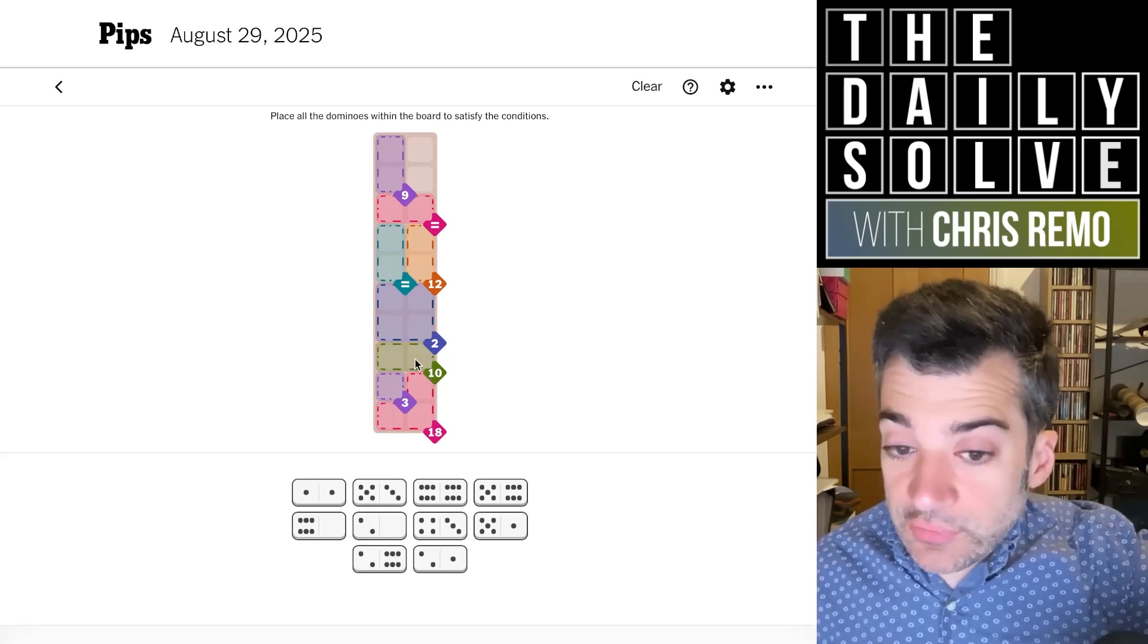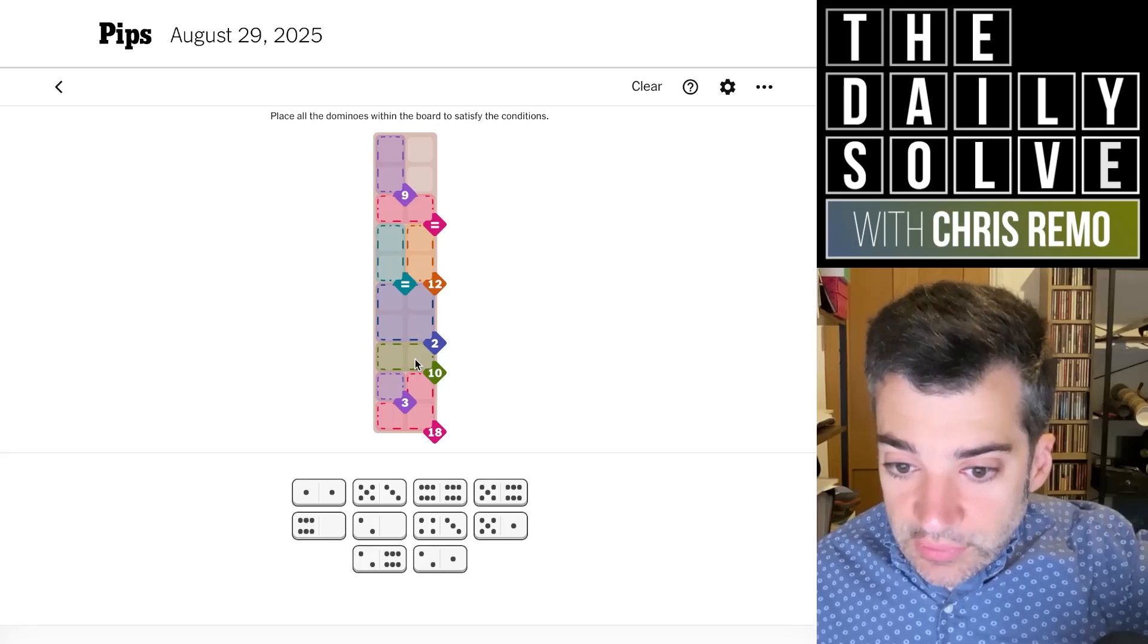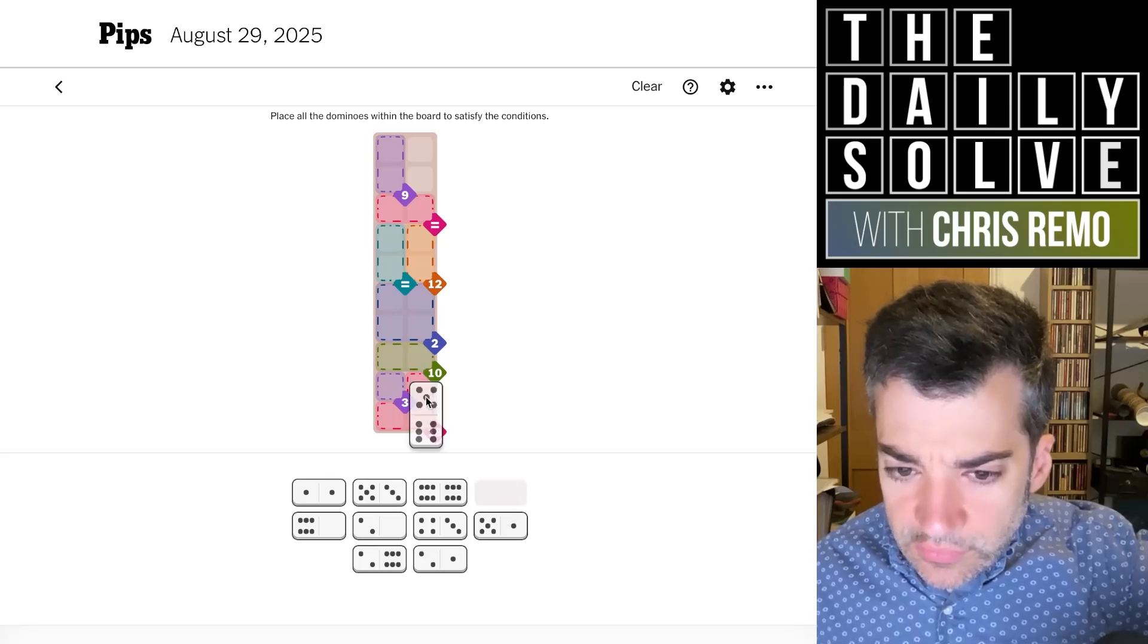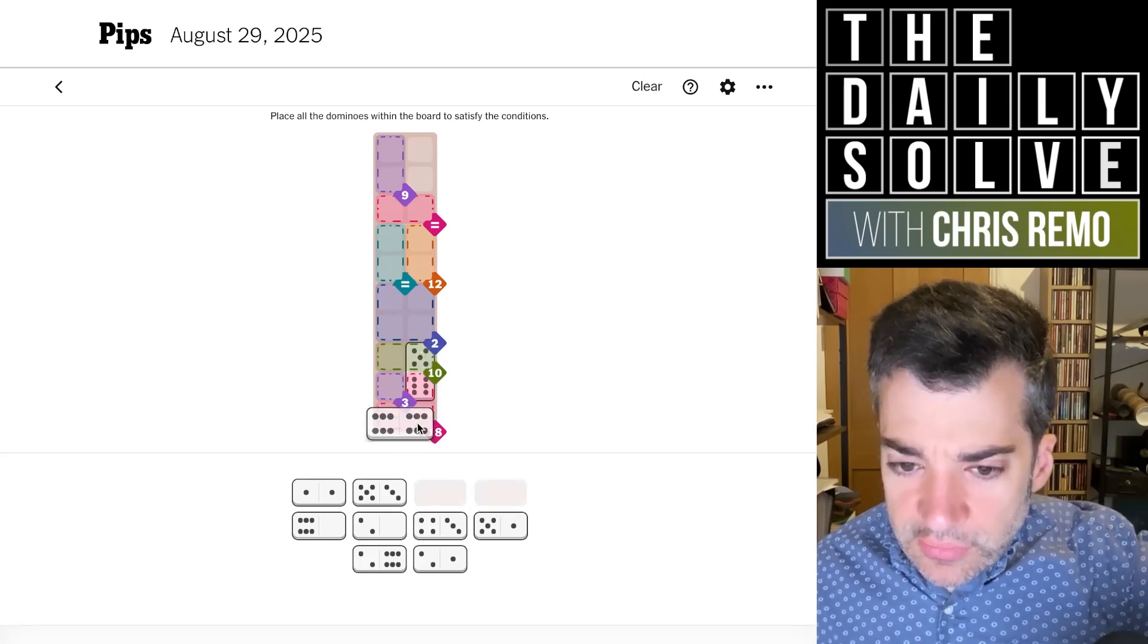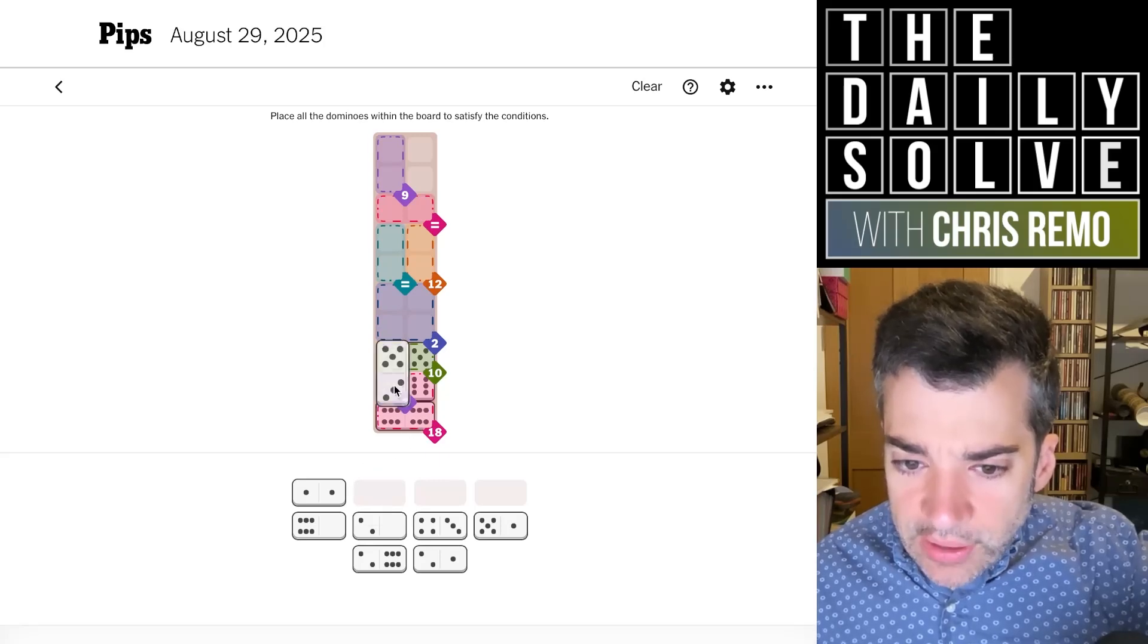And then we'll have a 10 which can't use any sixes because those are all spoken for. So the 10 will need to be two fives. So do we have a five-six anywhere to point down into the 18? We do. So let's try putting that there. Two sixes in the 18, a three and a five to make the 10.